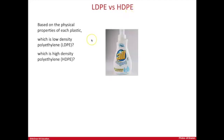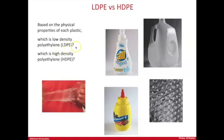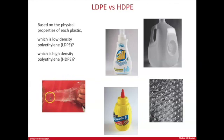Let's see if you can figure out which of these everyday plastic examples are low-density polyethylene and which are high-density polyethylene. Low-density polyethylene is very flexible, while high-density polyethylene is flexible yet more rigid. Plastic wrap and plastic bags, including Ziploc bags, are not very strong but are very flexible and stretchable, and tend to be transparent — like this bubble wrap.